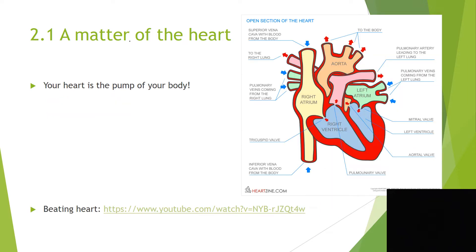Your heart is the pump of your body. Without this pump, blood and the substances in it cannot move. The heart is made of cardiac muscle tissue. The heart has four chambers. The top ones are called atria — one atrium, two atria. The bottom ones are ventricles.